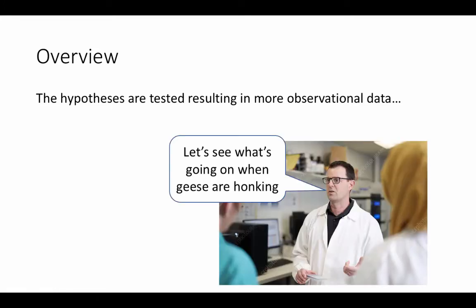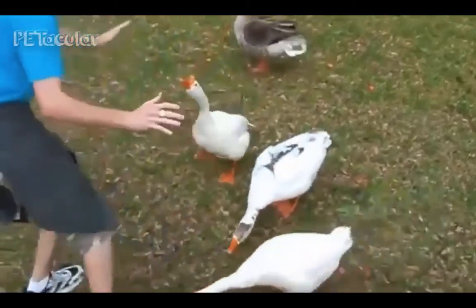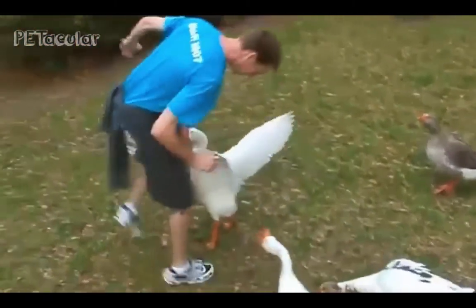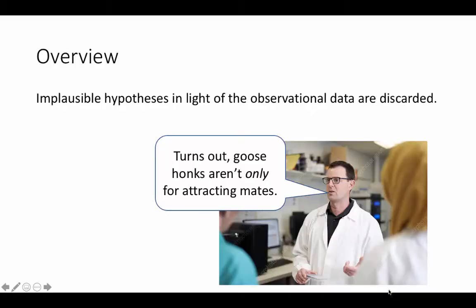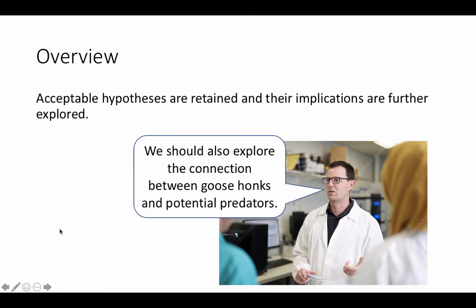For example, a scientist would want to observe what's actually going on when a goose is honking. Then, implausible hypotheses in light of the observational data are discarded — for example, goose honks aren't only for attracting mates. Acceptable hypotheses are retained, and their implications are further explored, such as the connection between goose honks and potential predators.